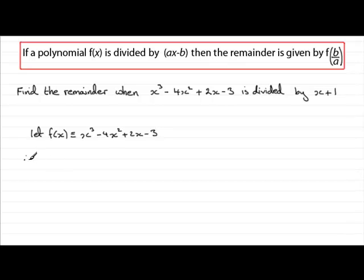So therefore, by the remainder theorem, that remainder is going to be worked out by doing f of negative 1. And f of negative 1, if we just substitute that for any value of x, we're going to have minus 1 cubed minus 4 times minus 1 squared plus 2 times minus 1 minus 3.